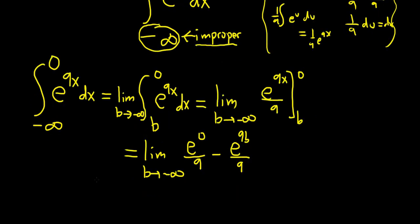Let's keep going. Okay, so this is equal to the limit as b approaches negative infinity. e^0 is 1, so we get 1/9 minus, and then we have this piece here. We have the 1/9 e^(9b).